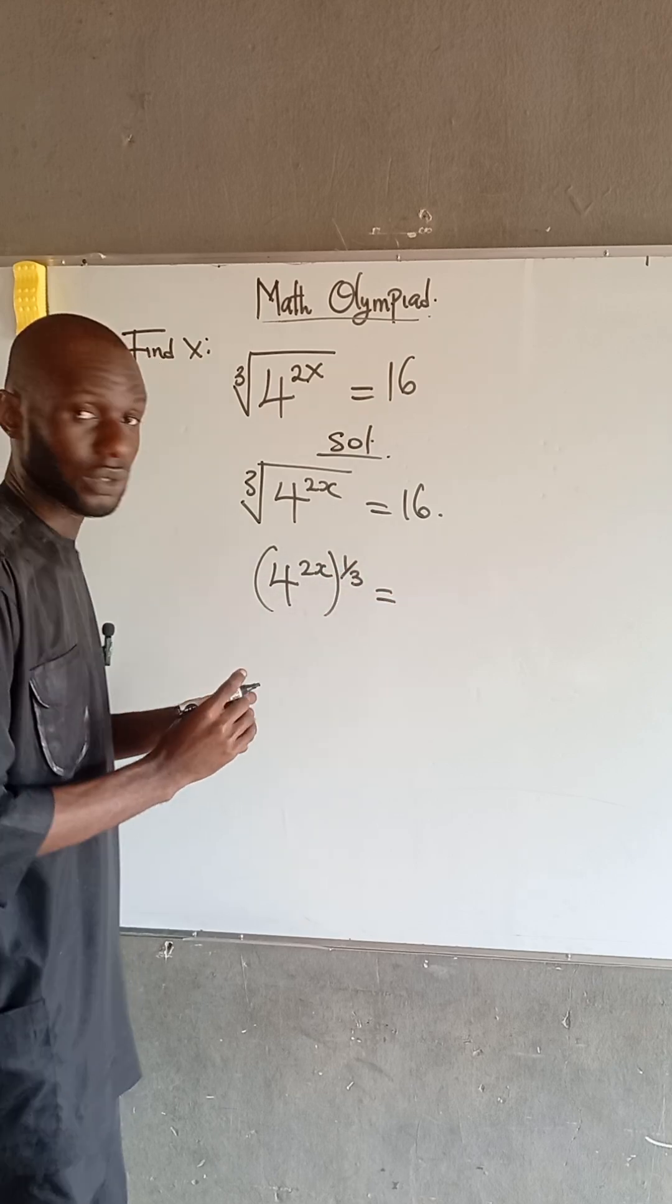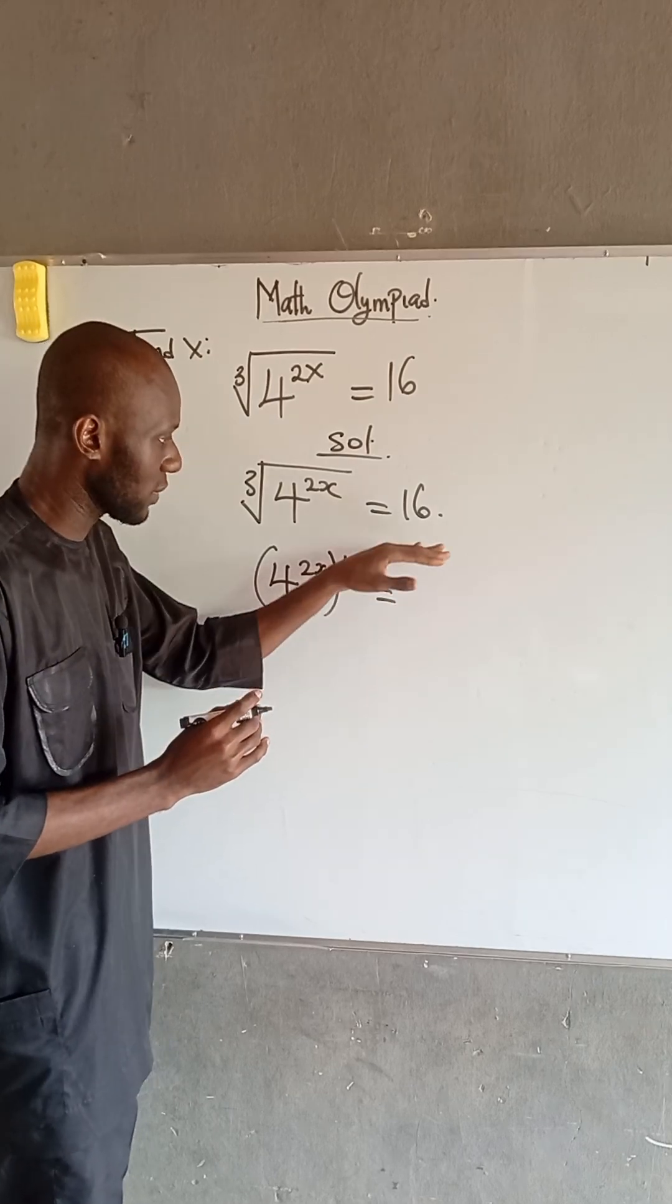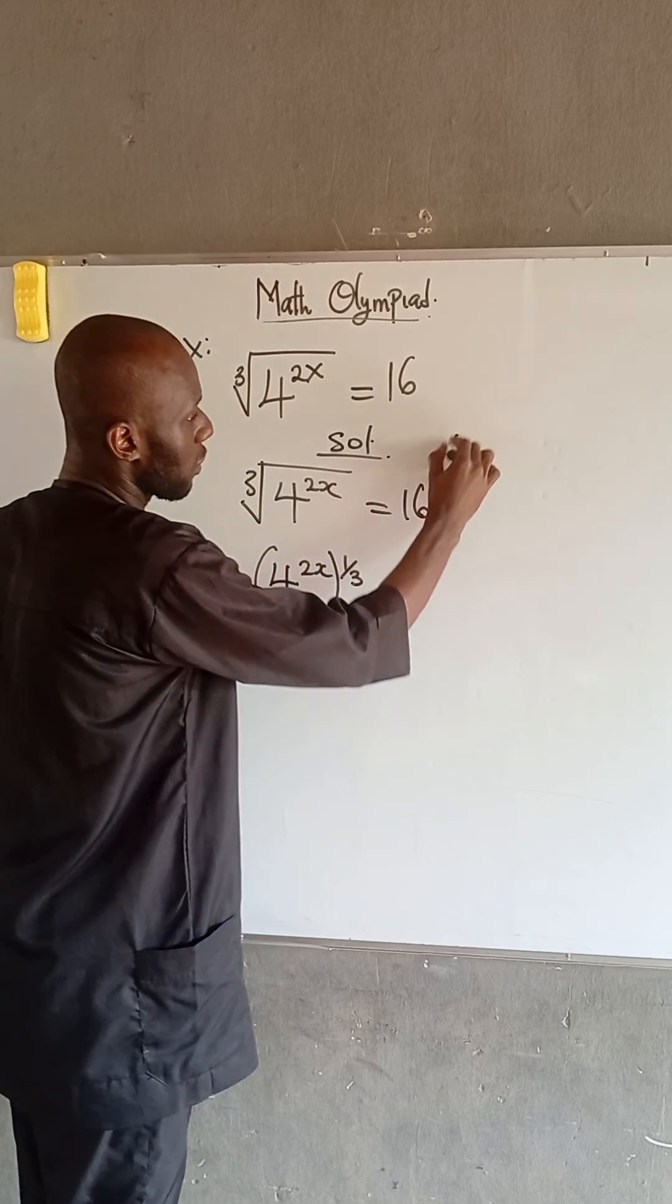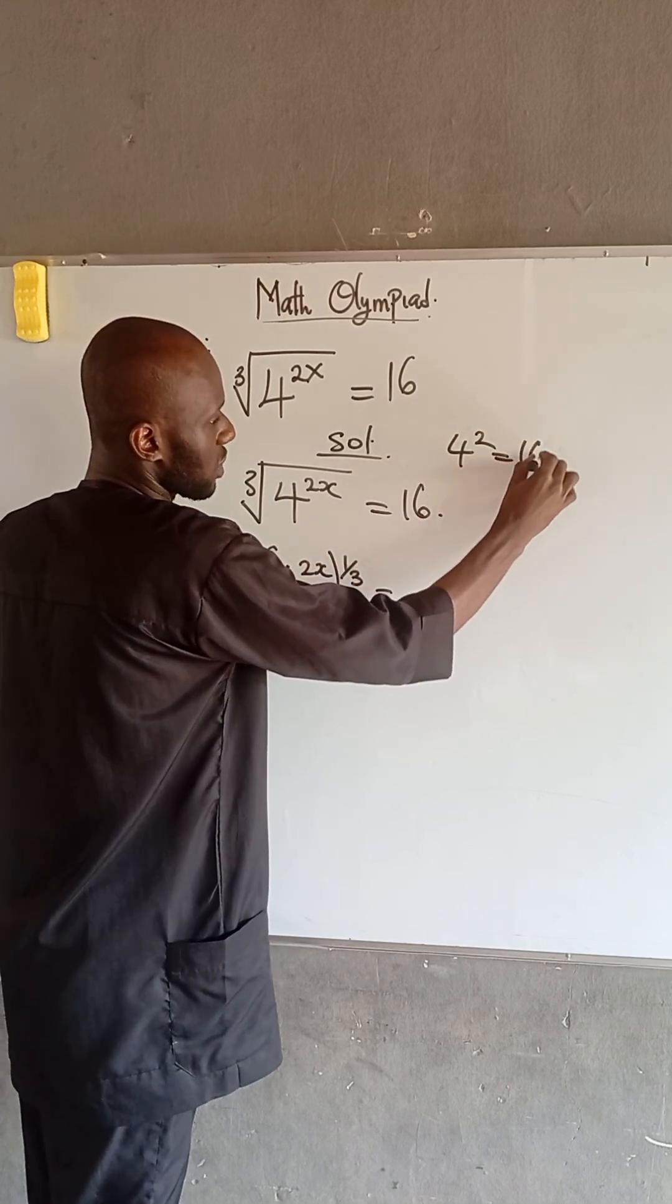Also, on the right-hand side, we can express 16 in powers of base 4. We know that 4 squared is equal to 16.